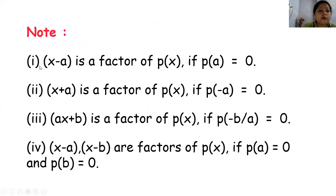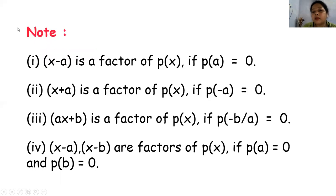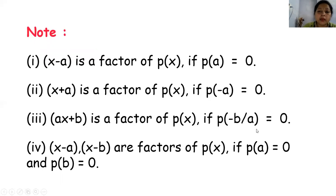कुछ notes हैं यहाँ. First: x minus a is a factor of p(x) if p(a) equal to 0. अगर x minus a factor है p(x) polynomial का, तो p(a) यानि remainder 0 होगा. फिर x plus a is a factor of p(x), then p(minus a) remainder वो भी 0 होगा. यहाँ ax plus b is a factor of p(x) if p(minus b by a) equal to 0, यानि कि इस case में remainder p(minus b/a) हो जाएगा.